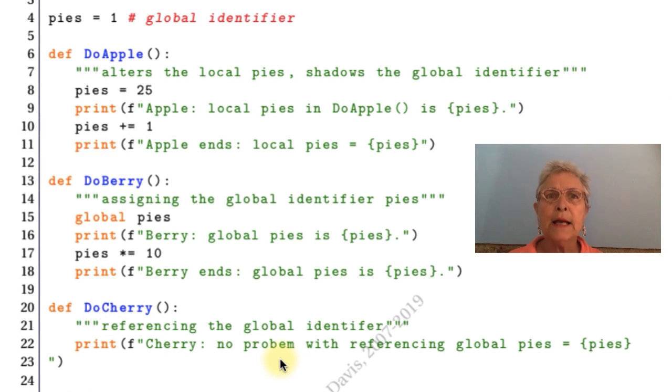Now Cherry. Here we see that referencing is different. Python on reference is very generous. Cherry has no assignment in it. There is only the reference of pies. The interpreter looks in DoCherry and does not see any assignment. Therefore it knows to look in the global space, and there it finds pies and reports them. So on reference, the interpreter looks in the local function namespace. If it doesn't find it, then it goes out to the global space. That's how reference and assignment are different.